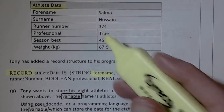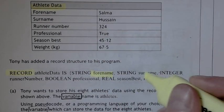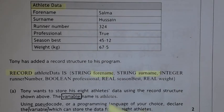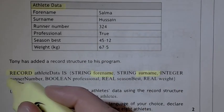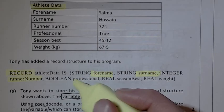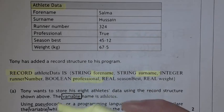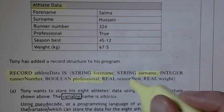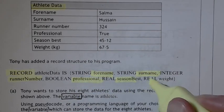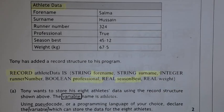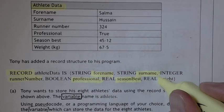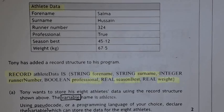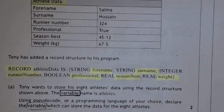So what you've got is: name is going to hold string, surname will hold string, runner number is integer, professional — if it's true or false — that's going to be Boolean. Season's best is going to be real, or you could even say single. These — single or real — as long as it represents a decimal point.